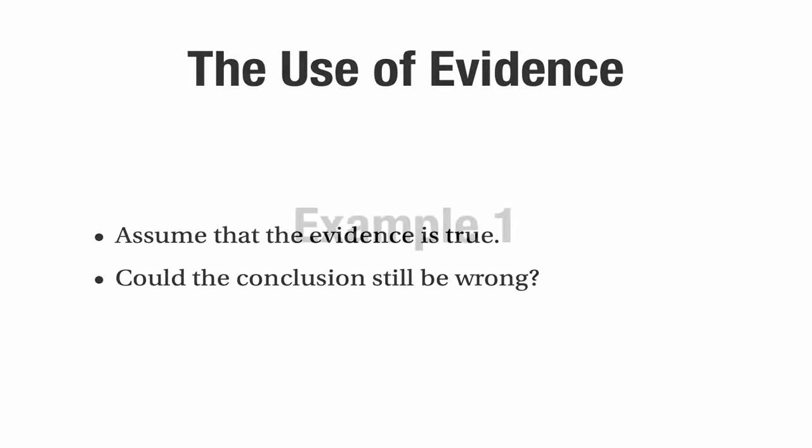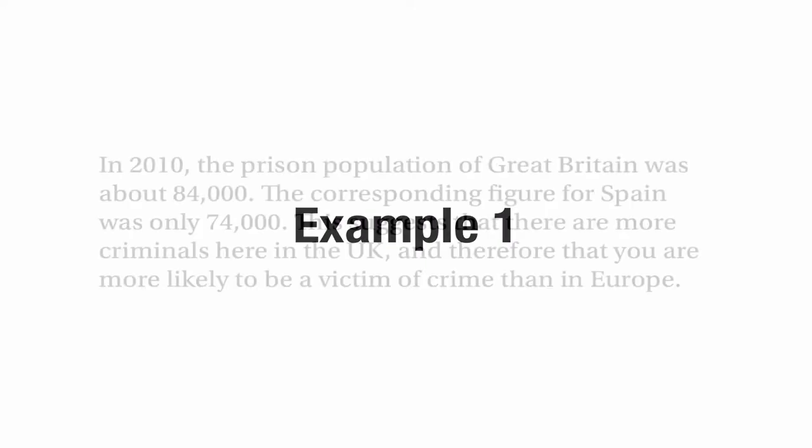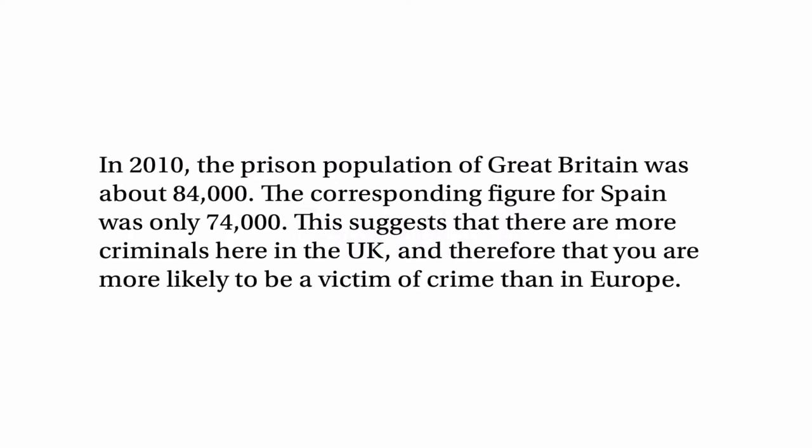Let's have a look at a couple of examples. Here's the first example. We have an argument which says: in 2010 the prison population of Great Britain was about 84,000, whereas the corresponding figure for Spain was only 74,000. This suggests that there are more criminals here in the UK and therefore that you're more likely to be a victim of crime than in Europe. Do these figures of 84,000 and 74,000 support the conclusion that you're more likely to be a victim of crime here in the UK than in Europe?